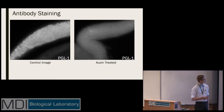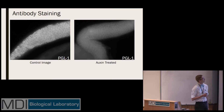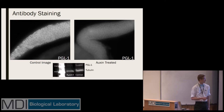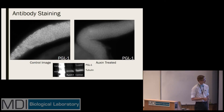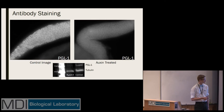On the left, you see a control image — a dissected germline stained for one of our target proteins, PGL1. As expected, you see aggregations around the nuclei; PGL1 is still present. However, on the right, when we expose our worms to auxin and stain for PGL1, we see that it is now gone from around the nuclei of the germ cells. Liz Marnick confirmed this using a Western blot, a technique used to check for presence or absence of a protein. The bottom shows an internal control tubulin expected to be positive for both samples. On the right, the control shows PGL1 still present, and in the auxin-treated sample, PGL1 is again gone.